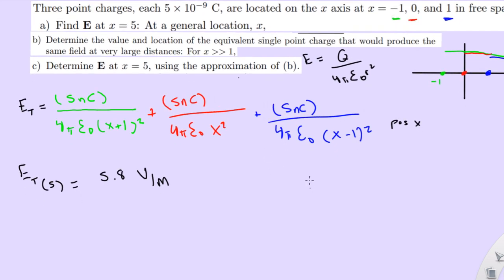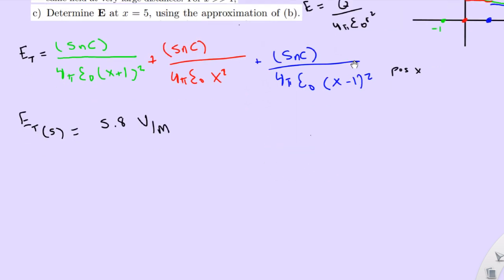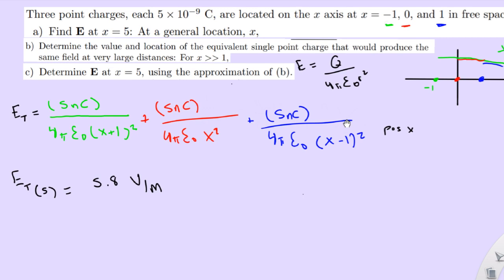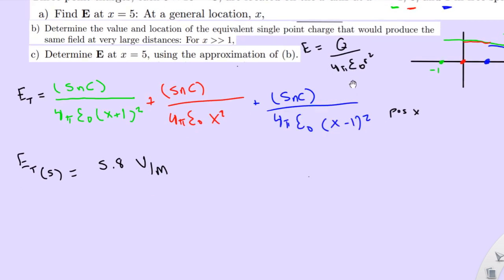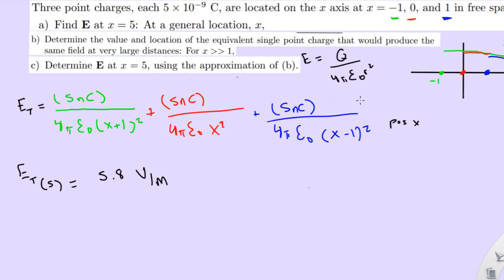It's Newton's per coulomb. Sorry, Newton's per coulomb. Yeah. Okay, anyway, so that's basically all of part A. Now part B, what would happen if it's at a very large distance? So we have our general equation, this is our general equation right here.